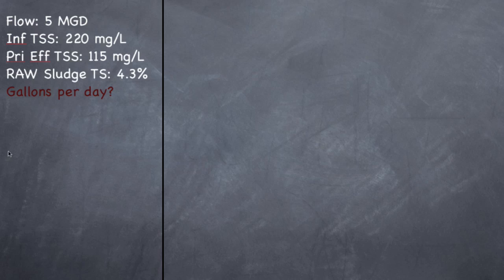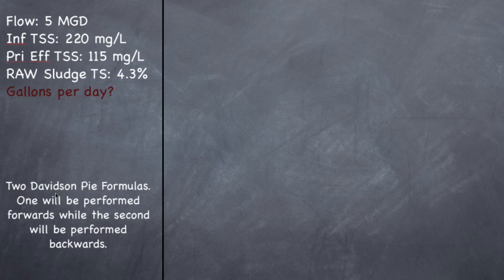So what it is, is two pounds formulas, and we're going to do the Davidson pie because I think visually it'll be easier for you to see what I'm doing. So two Davidson pie formulas, one performed forwards to find pounds, and then the second will be performed backwards to find gallons, flow. Remember you can perform it backwards to find flow or concentration, well flow can be converted to gallons, so that's how you figure this problem out.